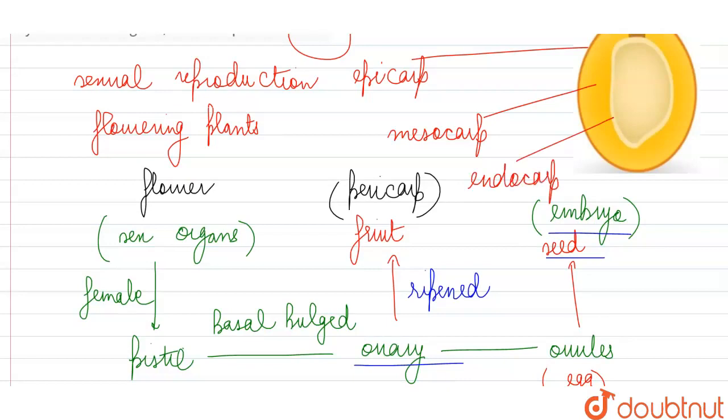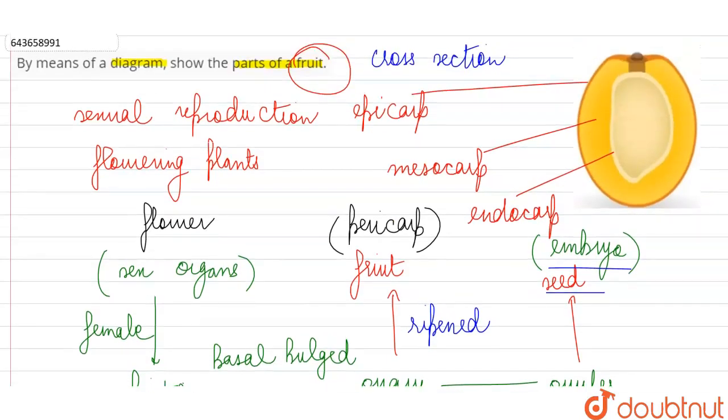The endocarp is close to the seed, and in case of the mango fruit it is quite hard, it is very stony type. So these are the three different layers we are going to find in the fruit wall.